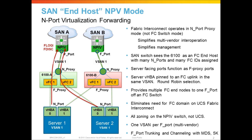The fabric interconnect really provides the illusion of servers all connecting directly to the upstream SAN switch. All zoning and all security configurations will be done on the upstream SAN switch and not on UCS. There really is no fiber channel configuration you need to do other than create uplinks for fiber channel and place them in a vSAN.